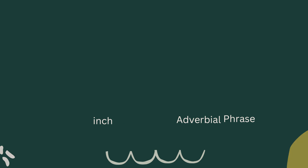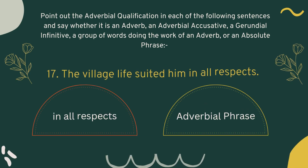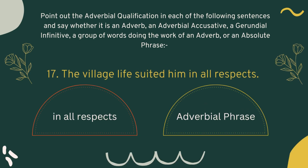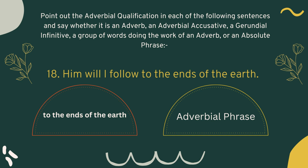Number sixteen: 'He saw a new world spread about him.' 'About him' is the adverbial qualification and this is an adverbial phrase. Number seventeen: 'The village life suited him in all respects.' 'In all respects' — these three words — are the adverbial qualification and this is an adverbial phrase. Number eighteen: 'Him will I follow to the ends of the earth.' 'To the ends of the earth' is the adverbial qualification and this is an adverbial phrase. Thanks for watching.